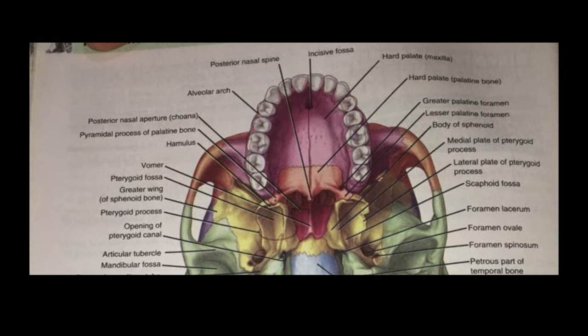Starting from the anterior side, the first thing we have is the alveolar process and the alveolar arch. After that there are incisors from the anterior side. Then you have seen a line — the suture is formed of maxilla and palatine bone. In the back of our palatine bone, you can label the palatine bone.